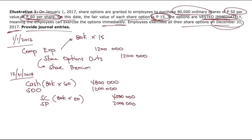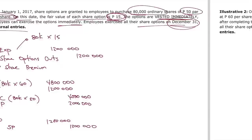What if the share options expire instead of being exercised? Simply derecognize the share options outstanding by debiting share options outstanding equal to 1.2 million and crediting share premium equal to 1.2 million — reclassifying it within equity.